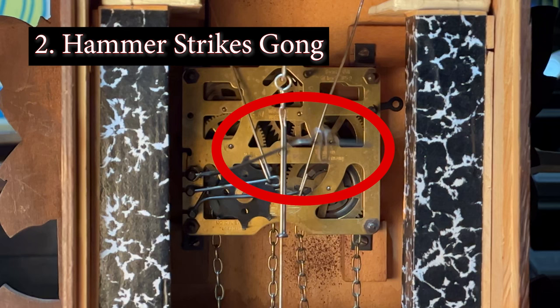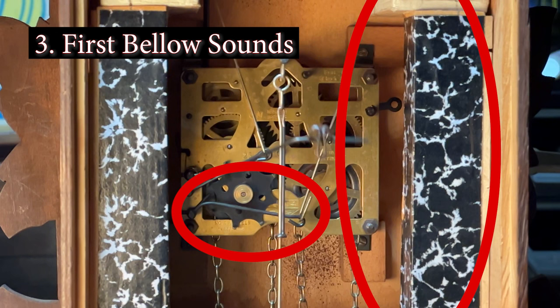Next, the hammer drops to strike the gong. Then you have the lower lever lifting and dropping the wire attached to the bellow on the right, producing the first tone of the cuckoo.